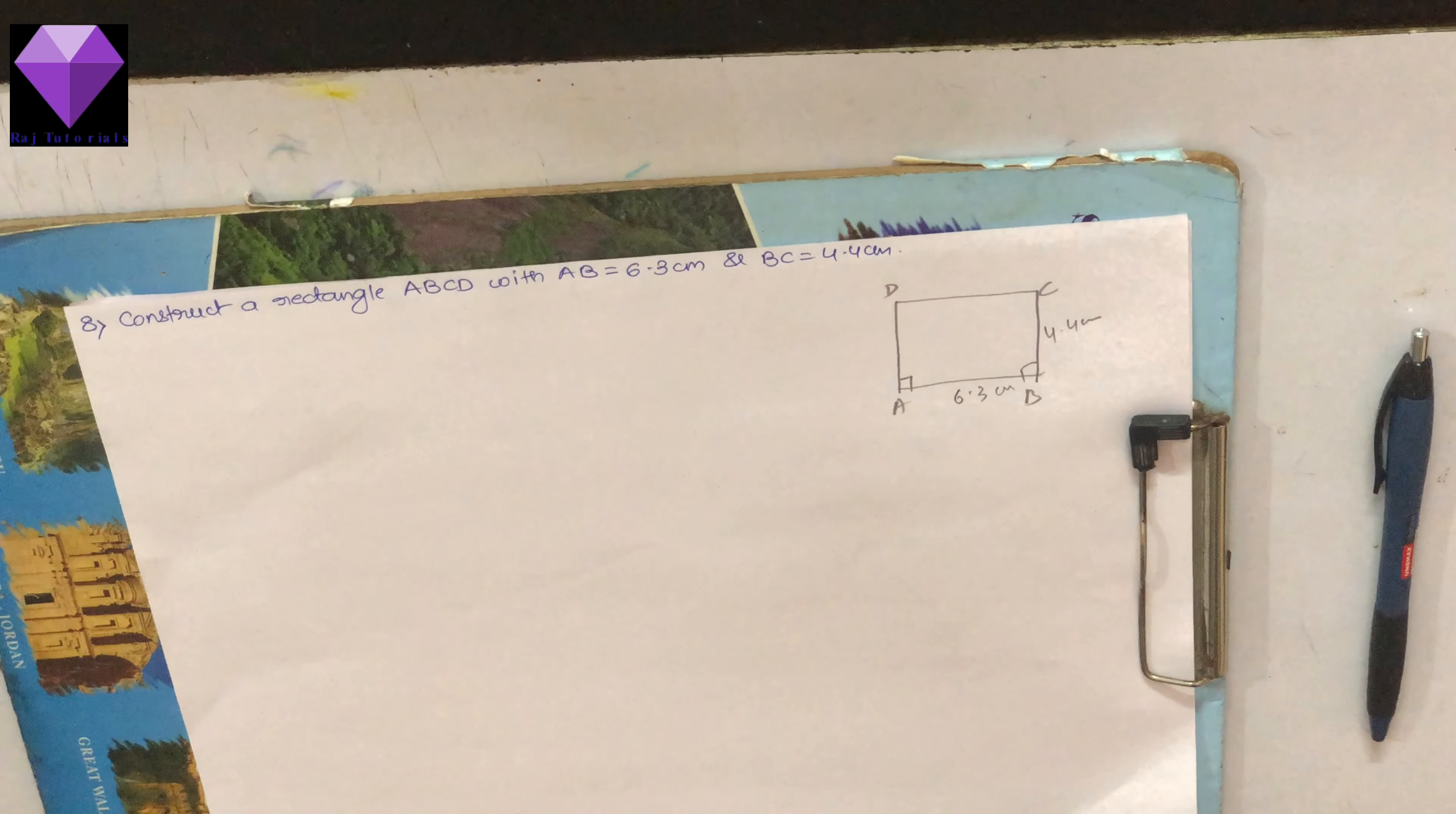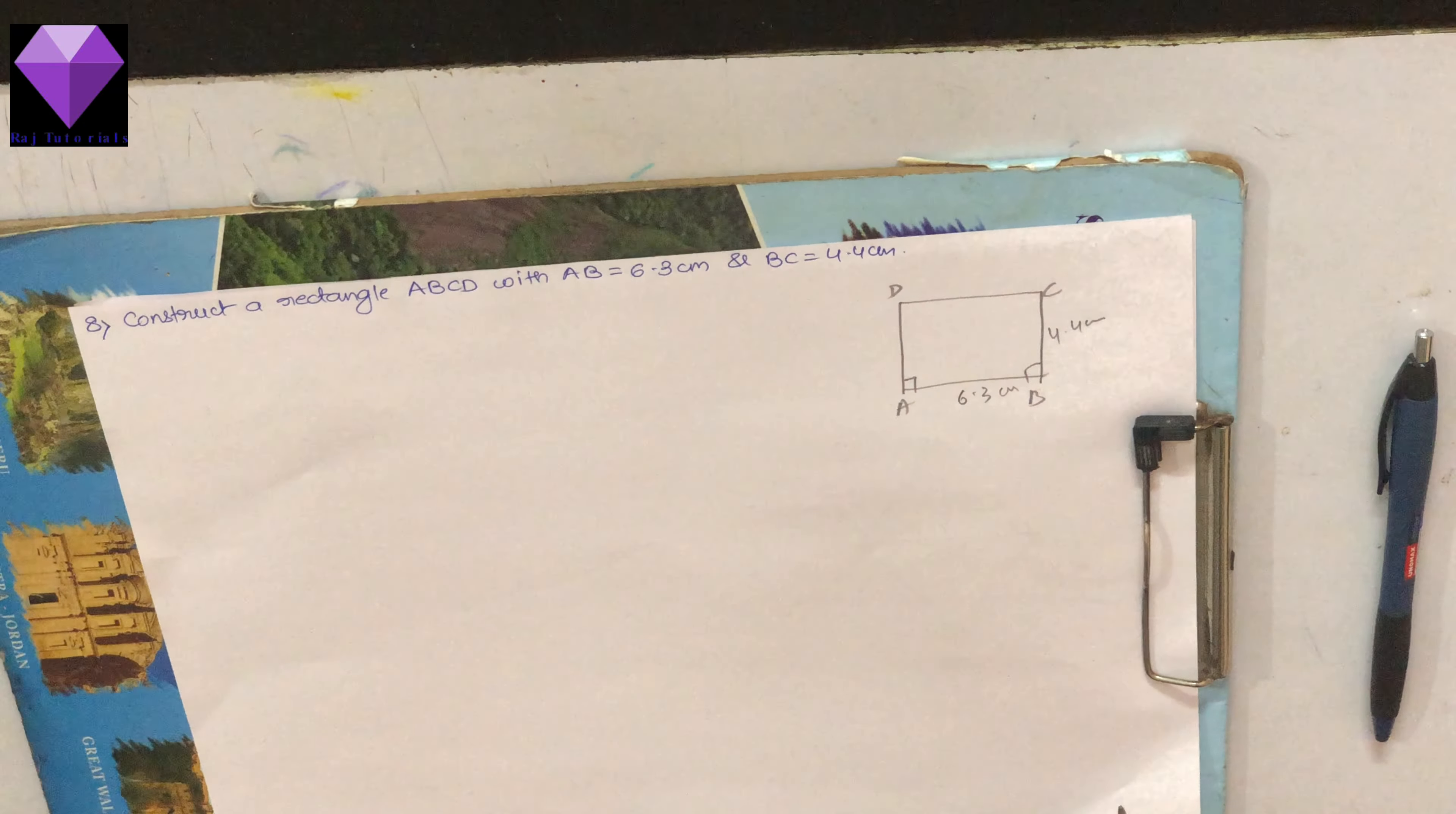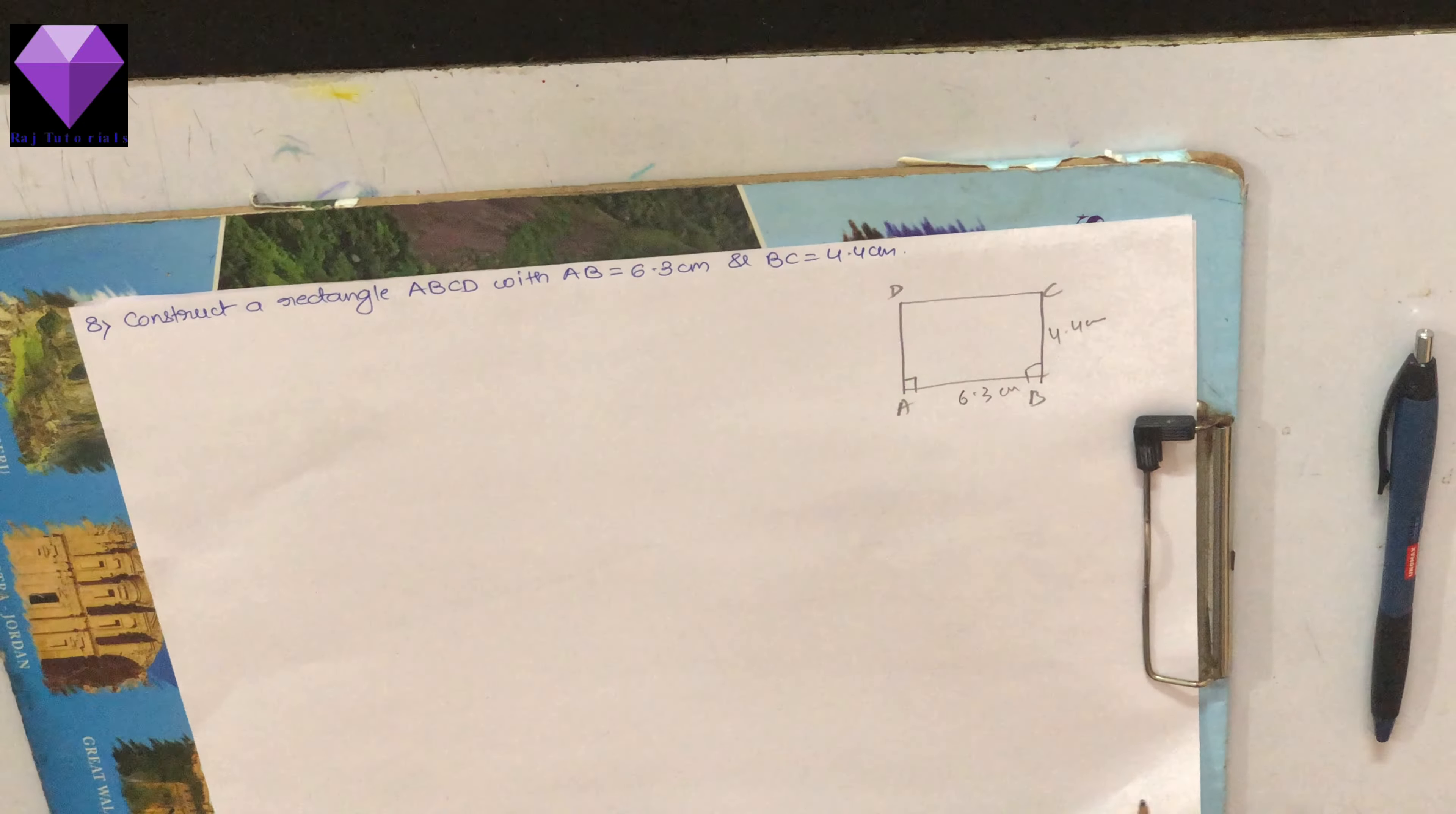Hello students, today we are going to construct a rectangle ABCD with AB 6.3 cm and BC 4.4 cm. So first I am taking 6.3 cm line segment AB.